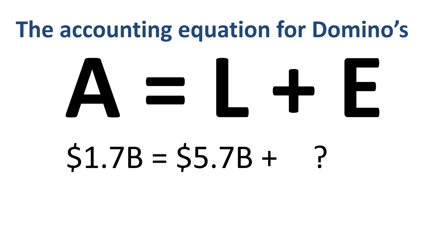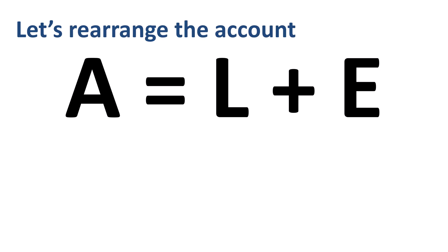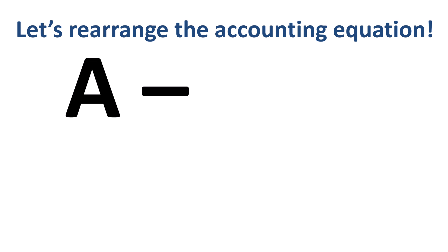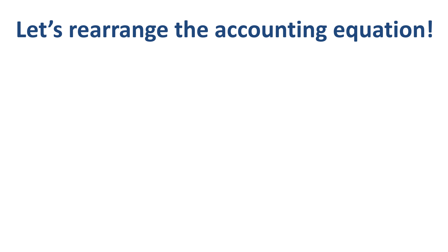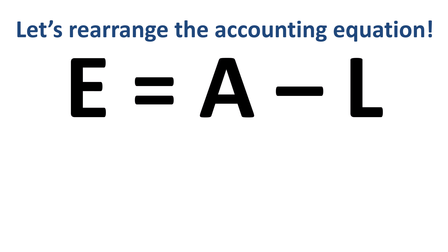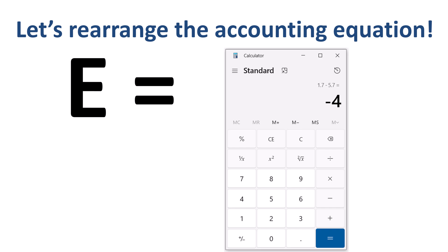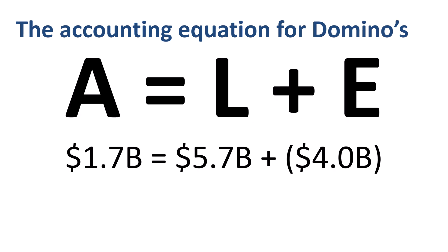What if the equity number is not given in a problem you need to solve? If assets and liabilities are known, we can calculate equity by rearranging the accounting equation. We move the L of liabilities from the right of the equals sign to the left: A equals L plus E becomes A minus L equals E. Let's move E to the front: E equals A minus L. Equity equals assets minus liabilities. Out comes the calculator: $1.7 billion minus $5.7 billion equals negative $4 billion. That's the equity equation for our Domino's Pizza example completed in two ways.